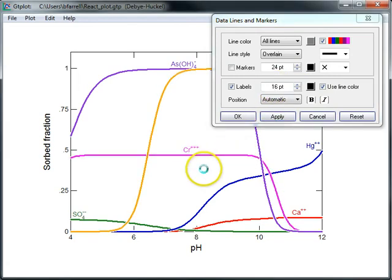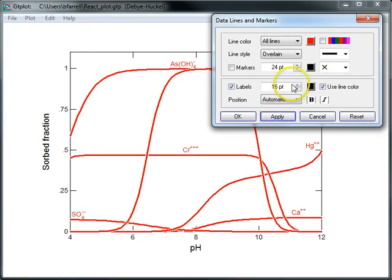If I don't like the colors that GTPlot chooses automatically, I can unselect this option, click Apply, and set line colors individually.